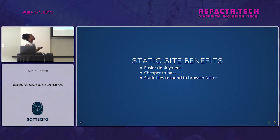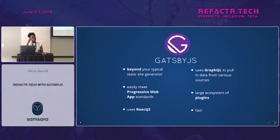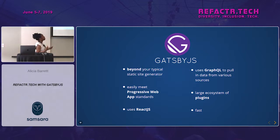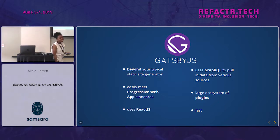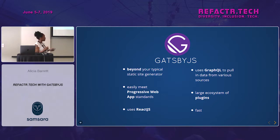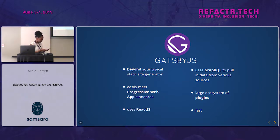What is Gatsby.js? A lot of people refer to it as a static site generator, but it's really beyond that. Gatsby.js has built-in capabilities to make your project meet the standards of a progressive web app. It uses React, it uses GraphQL to pull down data, there's a large ecosystem of plugins to add additional functionality, and it does a lot of code splitting to make your site perform really quickly.